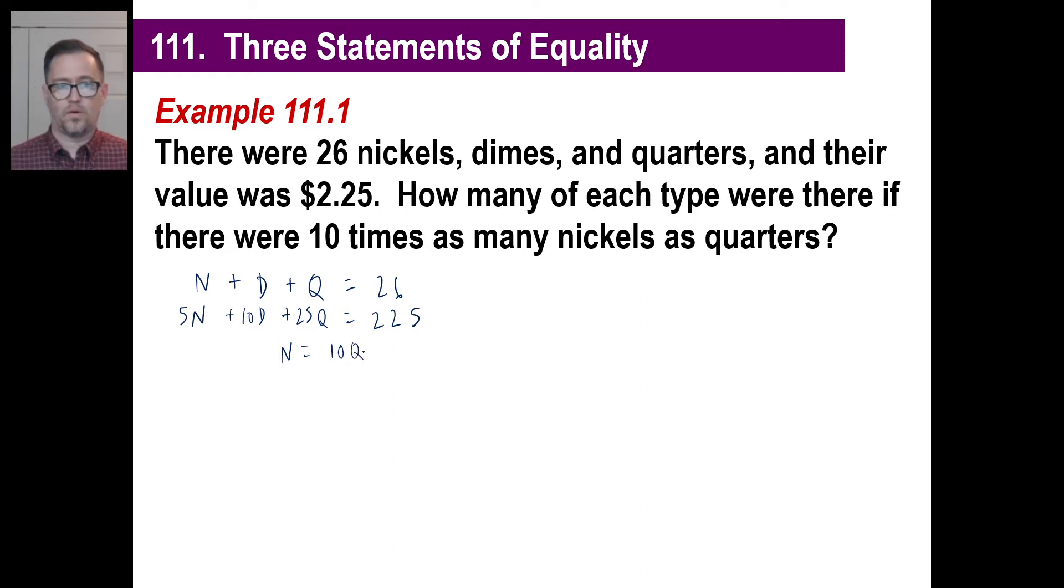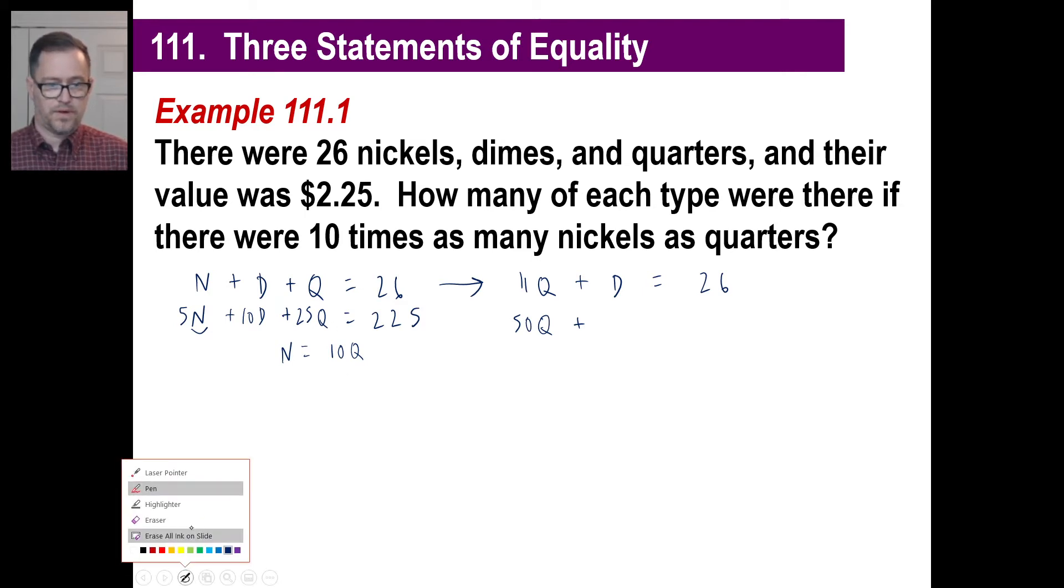We're going to write 5 times nickels plus 10 times dimes plus 25 times quarters equals 225. So the number of nickels is 10 times the number of quarters. We can just solve now. N equals 10 times Q. We can just stick that in here. So 10Q plus 1Q is 11Q plus D equals 26. And if N equals 10 times Q, then 5 times 10 times Q is 50Q.